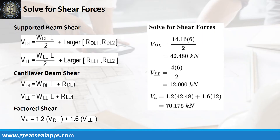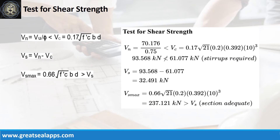The shear force from dead load is 42.48 kN and from live load is 12 kN, for a factored shear force of 70.176 kN. The nominal shear force is 93.568 kN, which is greater than the concrete capacity of 61.077 kN. The additional shear capacity from stirrups is 32.491 kN, which is less than the maximum stirrup capacity of 237.121 kN.